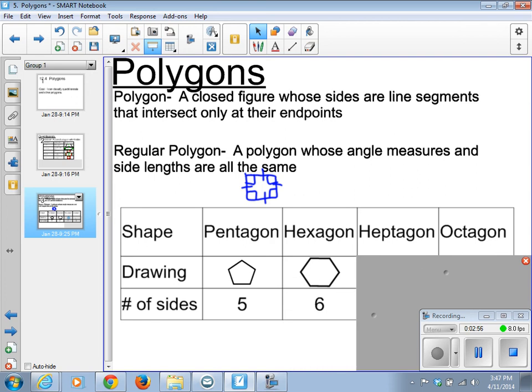Hexagon has six sides. Think of some fish bowls are in this shape. If you ever look closely at a honeycomb, it's usually a hexagon as well.